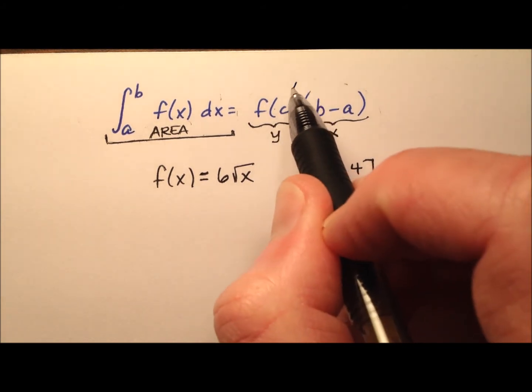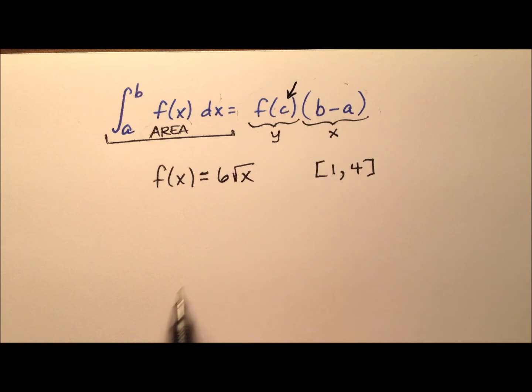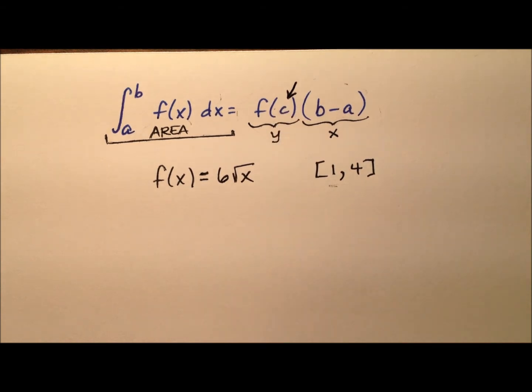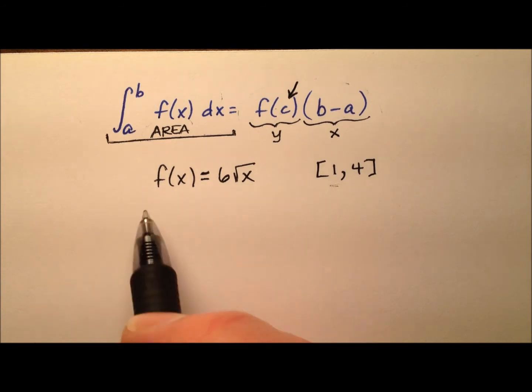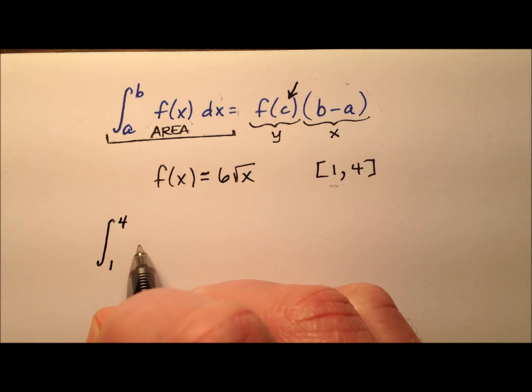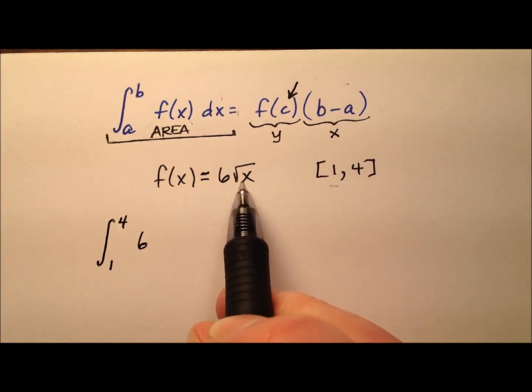Our mean value theorem says that there is this c value, which is going to be an x value, somewhere in this interval that we're looking for. It guarantees the existence of this c value. So let's go ahead and find it. We'll start by doing this definite integral.